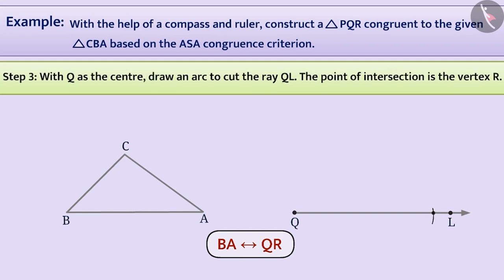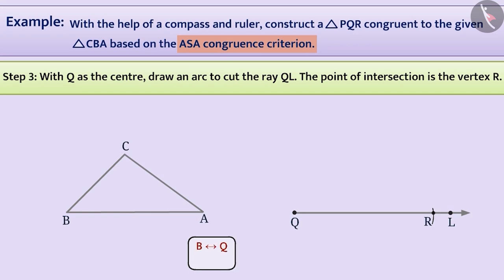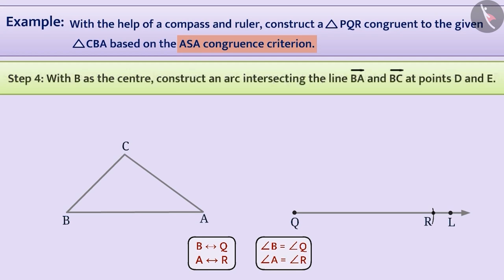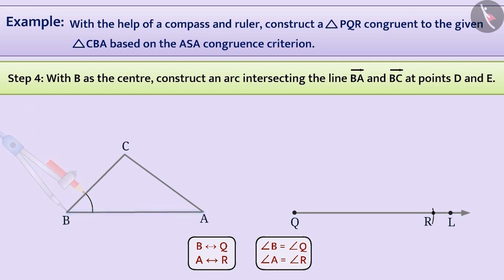According to the question, we have to construct the triangle based on ASA congruence criteria. Therefore, with B corresponding to Q and A corresponding to R, we will construct angle Q with an equal measure of angle B, and angle R with an equal measure of angle A. Step 4: With B as the centre, construct an arc intersecting the line BA and BC at points D and E.